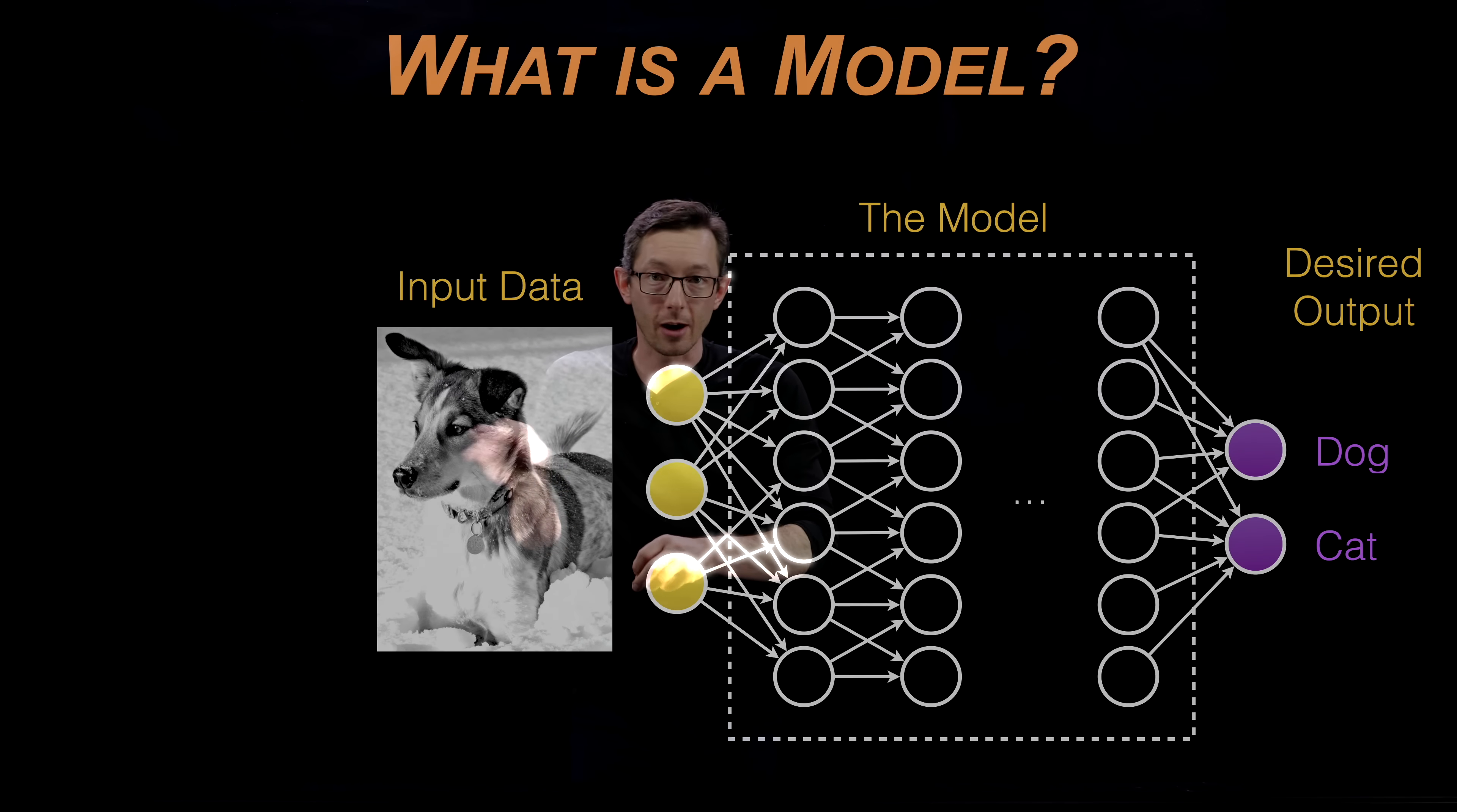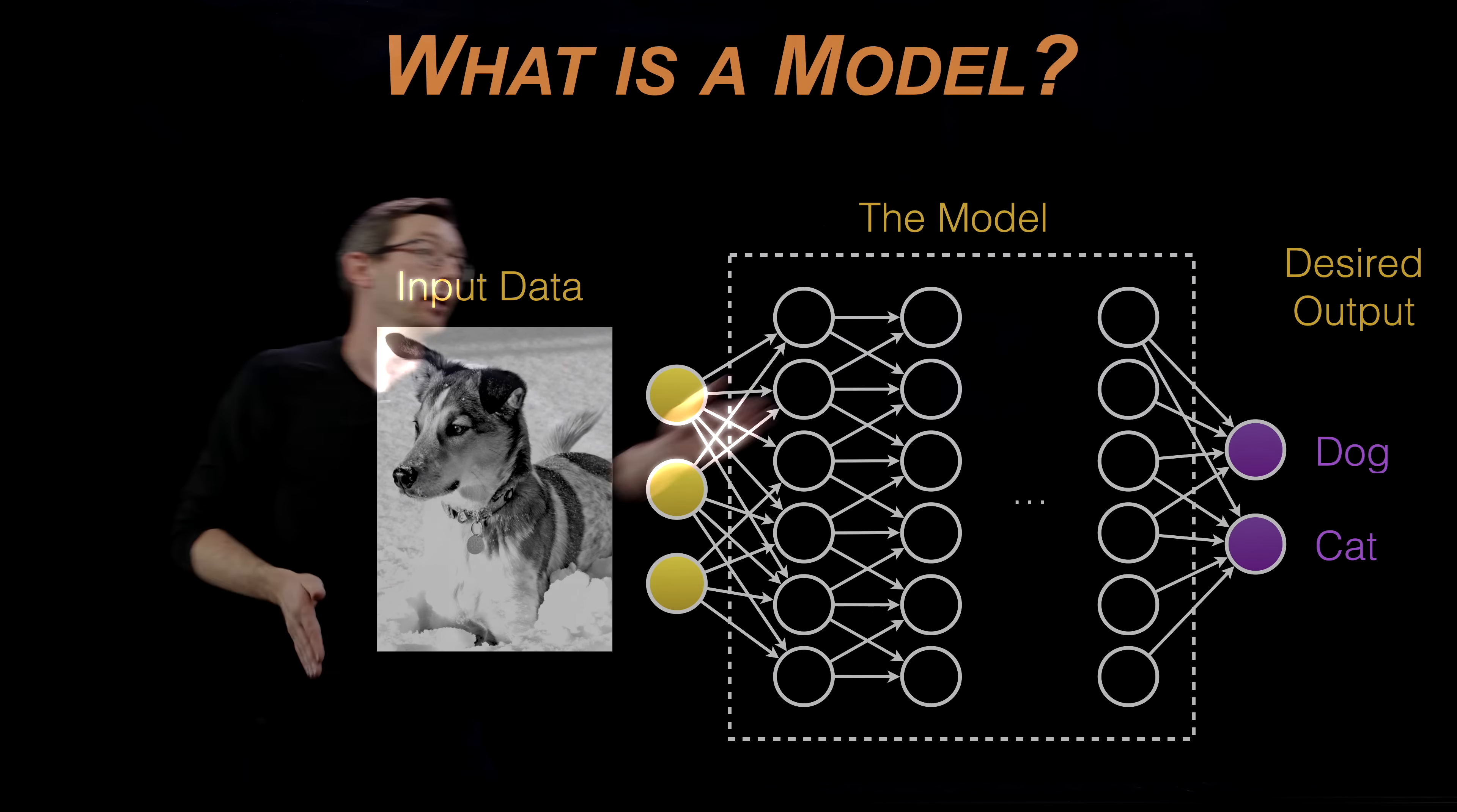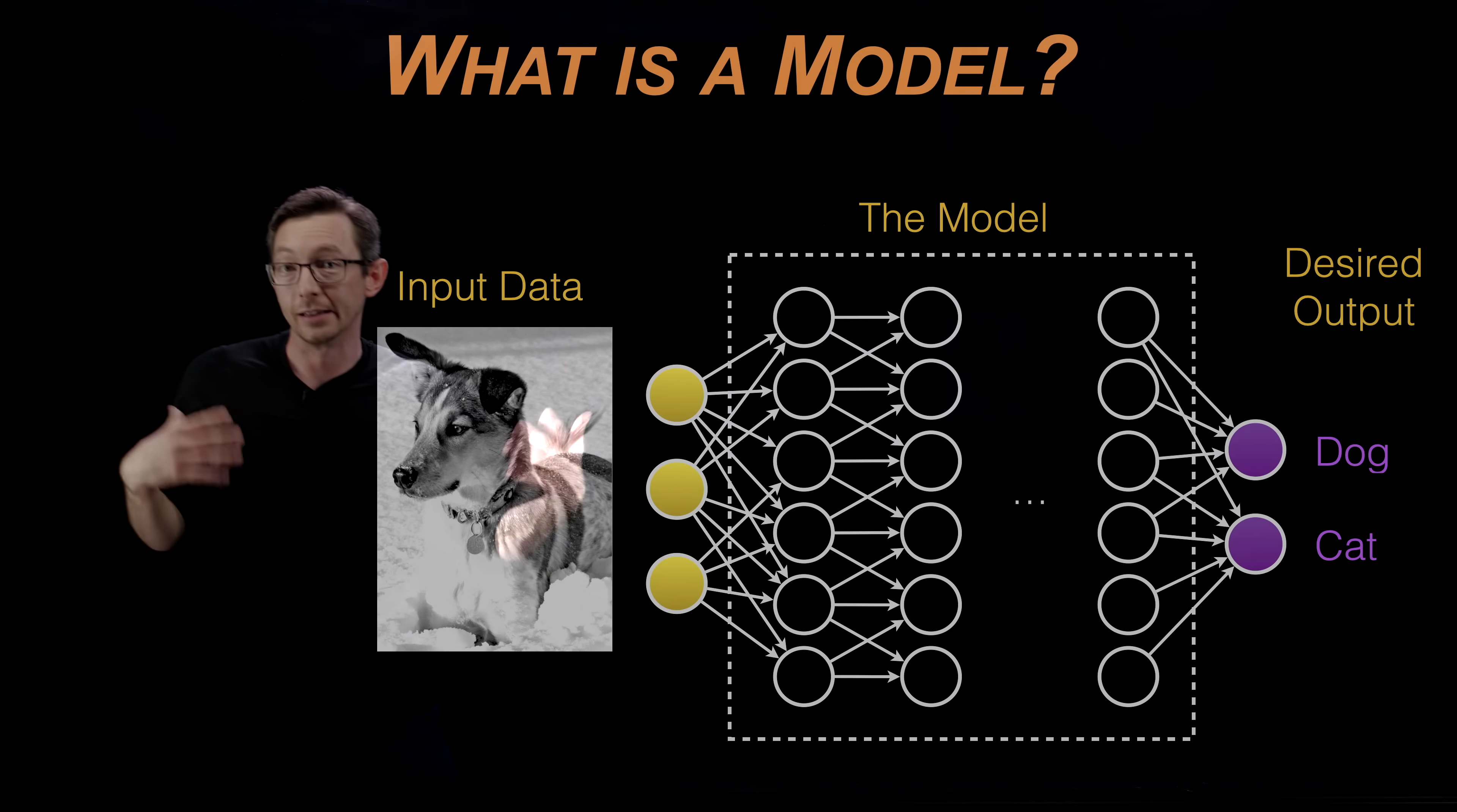It might be some complicated function. After doing all of this numerical evaluation, at the output is going to be some desired output. For example, if I'm trying to build a classifier that tells dogs and cats apart, then my output might be a two-vector with my probability of it being a dog and the probability of it being a cat. If I do a really good job when I put in an image of Mort the dog, then this vector should return a one-zero because it's very confident that it's a dog.